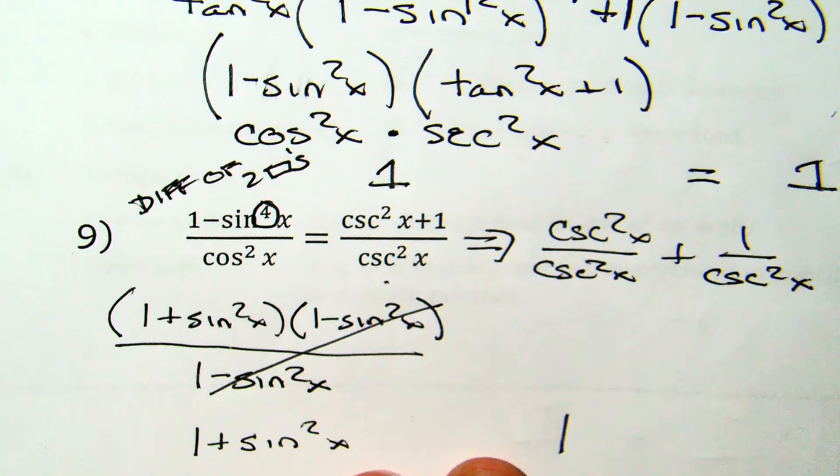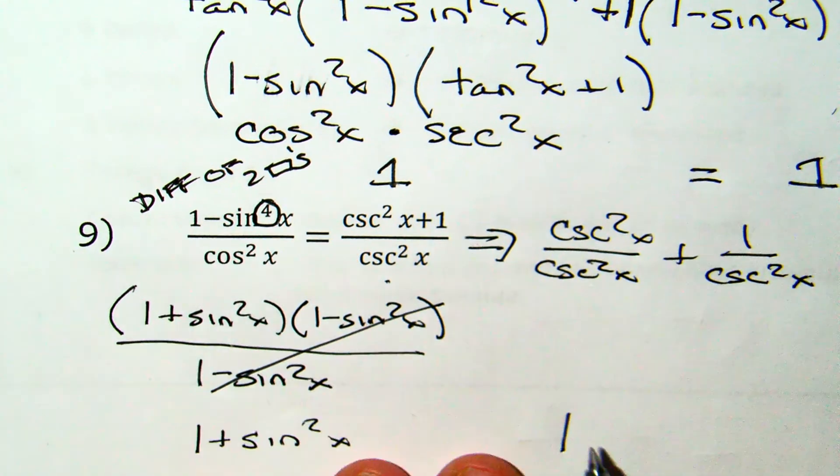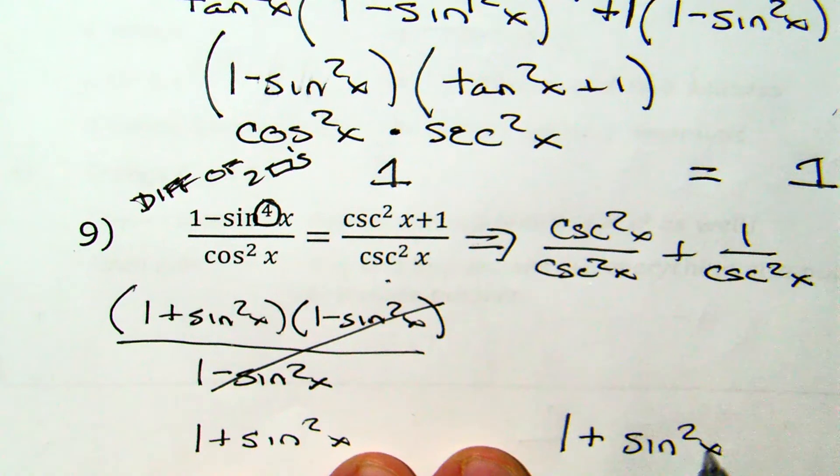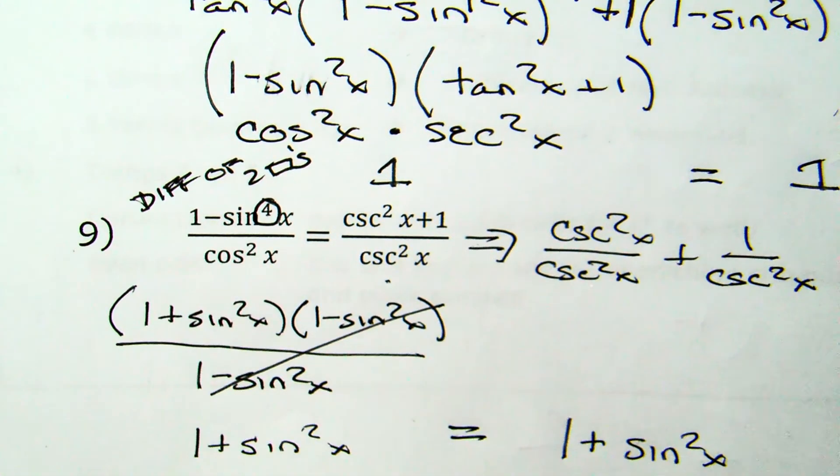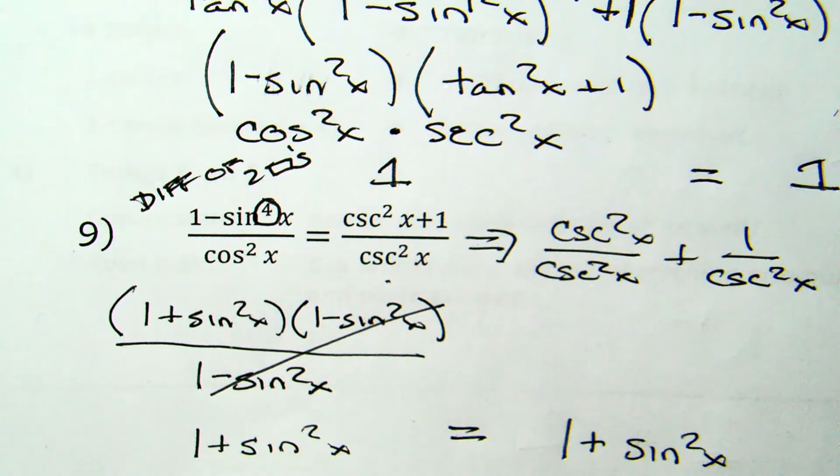Whenever I divide something by itself, they cancel out, giving me one. And whenever I have one over something, that's a reciprocal. The reciprocal of cosecant squared is sine squared. The two sides are exactly the same, and I've completed the problem.